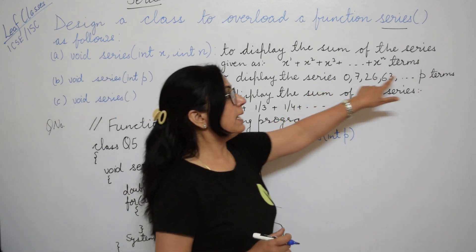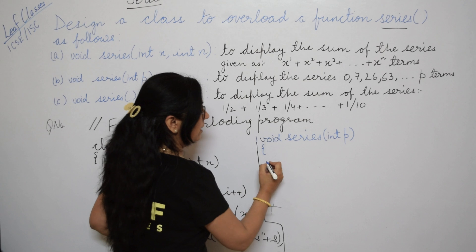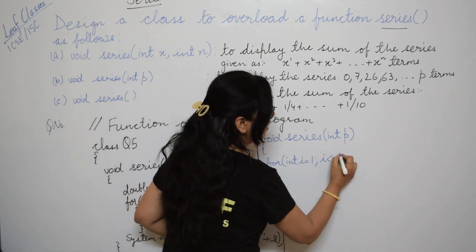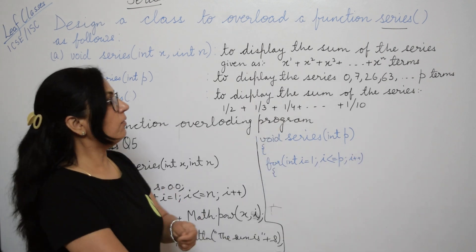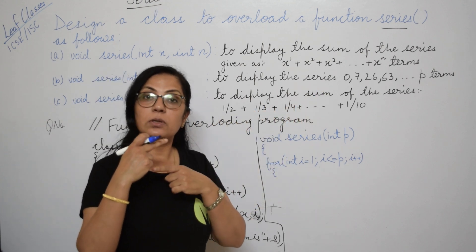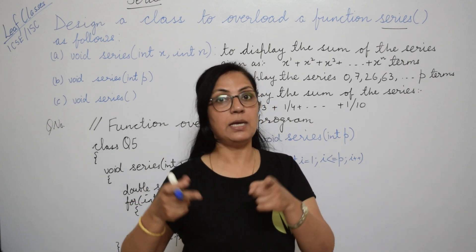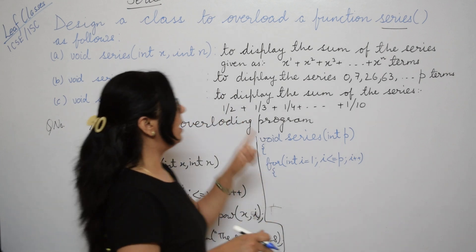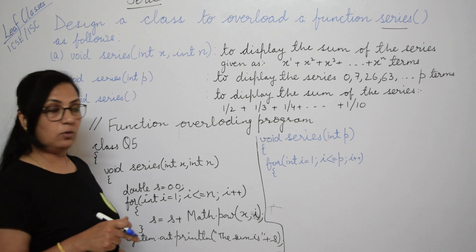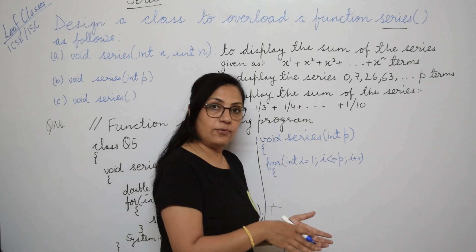We will take the loop: for int i equals 1, i less than equals to p, i plus plus. We have to print the terms p times, so output will be generated that many times. Anything you want to repeat again and again should be inside the loop. Printing we need many times, so printing statement will be inside the loop. Earlier we needed the print once for the sum, so print statement was outside the loop.